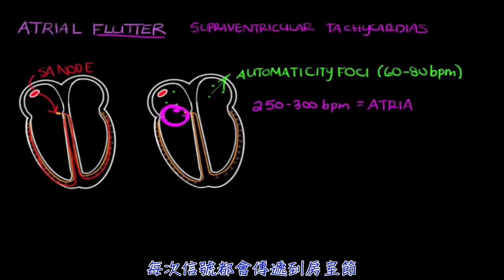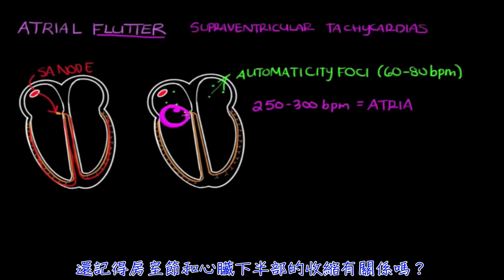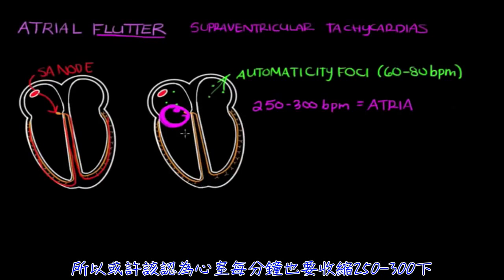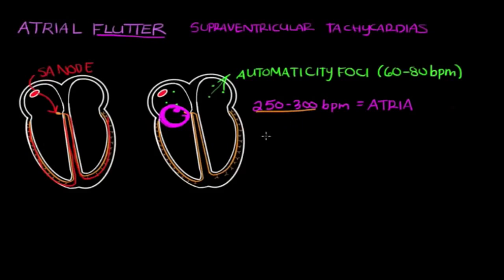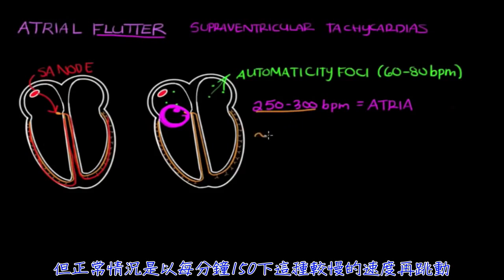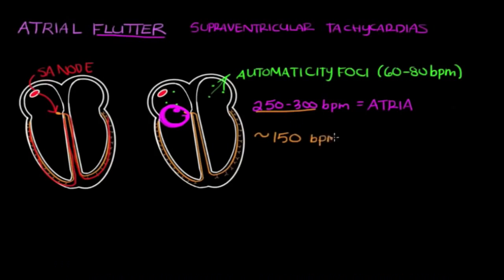Every time the signal goes around, it's going to hit the AV node. The AV node is what conducts the signal down to the lower half of the heart and makes the ventricles contract. So you might think the ventricles are also going to contract at 250 to 300 beats per minute, but in reality the ventricles usually contract at a slower rate, around 150 beats per minute.